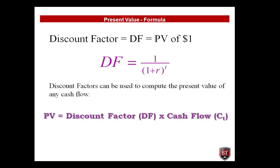The Discount Factor equals DF equals the present value of $1 — see the formula on the screen. R equals the interest rate; T equals the number of years. Discount factors can be used to compute the present value of any cash flow. Present Value equals the discount factor times the cash flow.